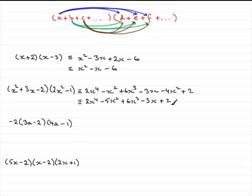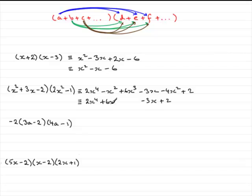If they did ask you to expand this in descending powers, then I'd have to take care over this step. I would need to put the 6x cubed first and then the minus 5x squared. So in descending powers it's going to be 2x to the power 4, plus 6x cubed, minus 5x squared, minus 3x, plus 2.